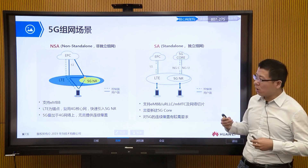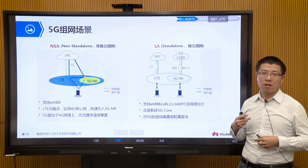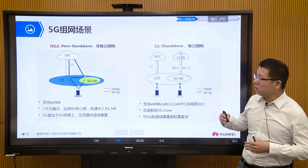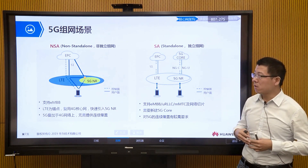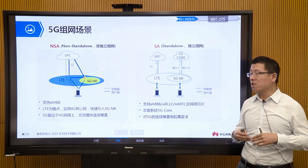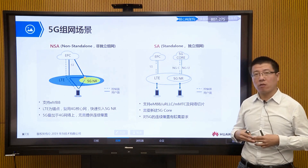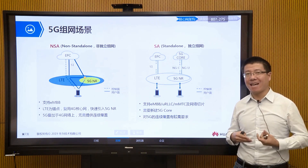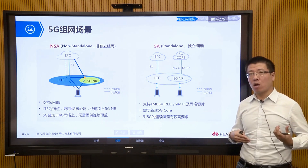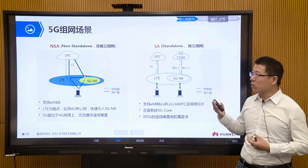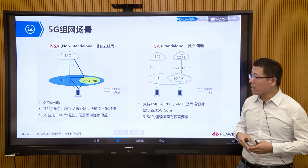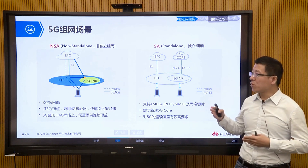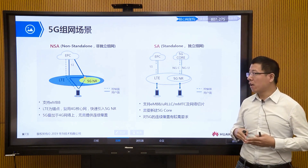In NSA, the signaling plane is on the 4G side, and only user data forwarding is done on the new 5G base station. The characteristic of this network is we can rely on the 4G core network, which is our EPC. However, because it needs to interface with the 5G base station to recognize new network parameters, the EPC needs a software upgrade. This is our core network part, based on 4G network equipment upgraded through software.